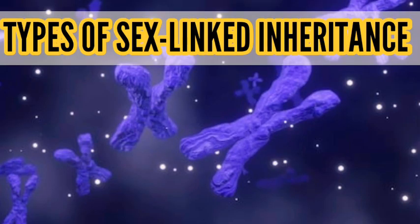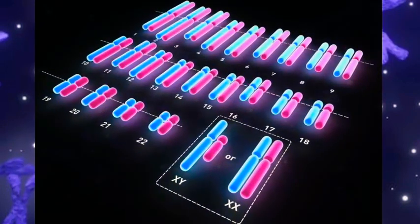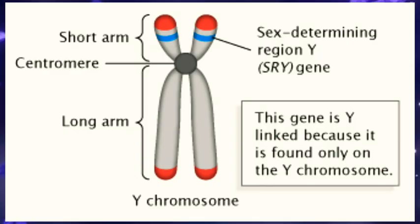We know genes for sex-linked characters occur in both segments of X and Y chromosomes. X is for the female and Y is for the male. The Y chromosome determines male sex because it carries the SRY gene.